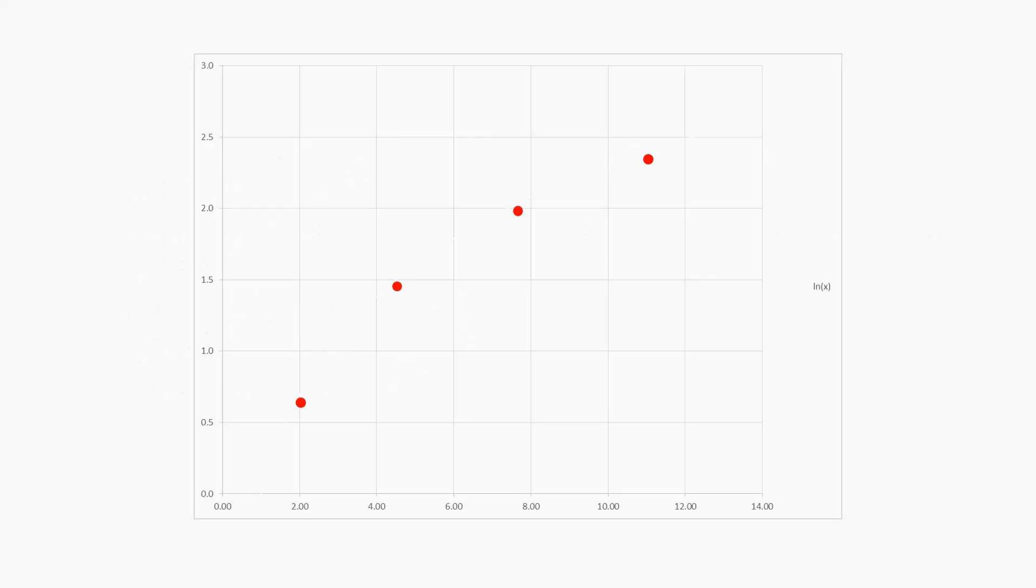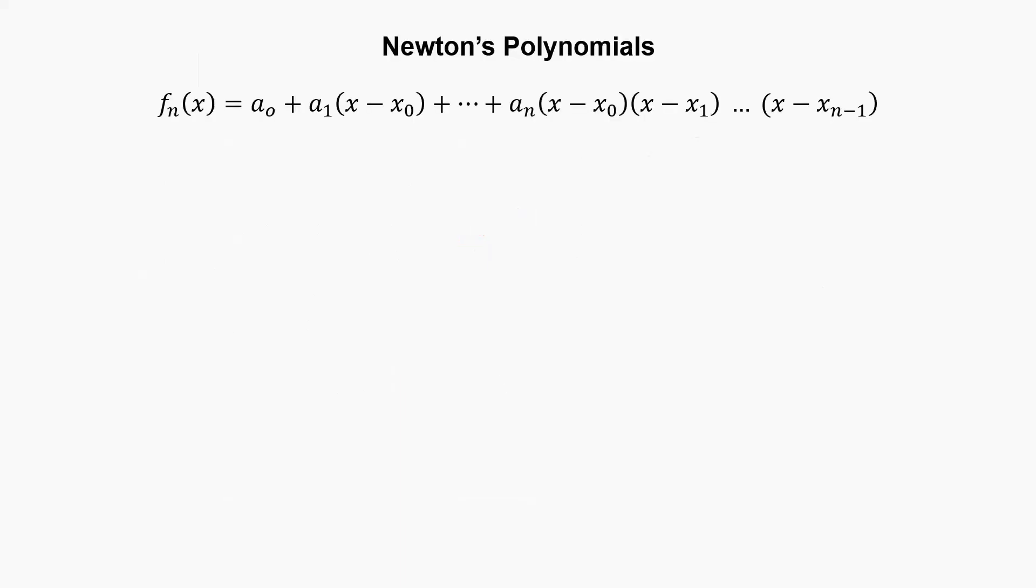Another way to solve the value in between the known data points without having the exact solution is by means of Newton's Interpolation Method. This method starts by defining the general equation of the polynomials, the so-called Newton's Polynomial. Then, one by one, we will define the coefficients to complete the polynomial.